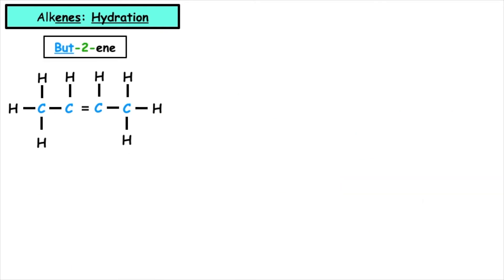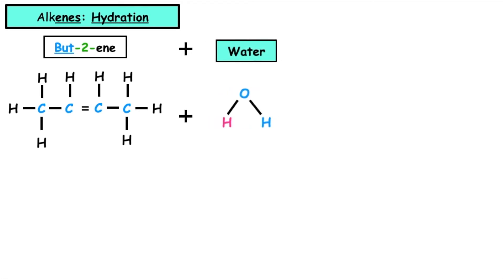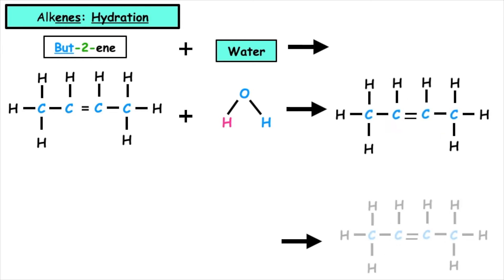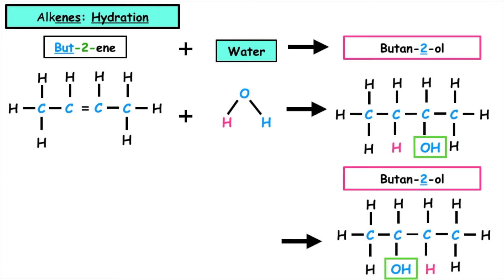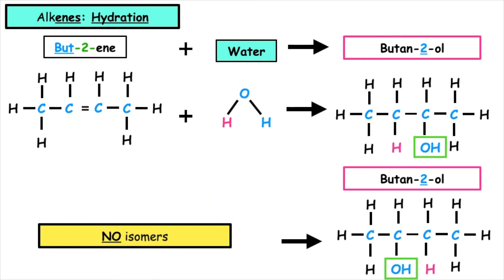If we were to take bute-2-ene this time, this is where the carbon-to-carbon double bond is on the middle carbons on position two, and we were to add a molecule of water, no matter which way we draw the product, the name of the alcohol produced will always be bute-2-ol. So this time, we do not produce any isomers.